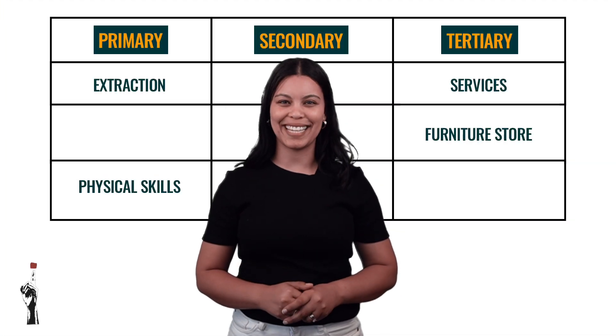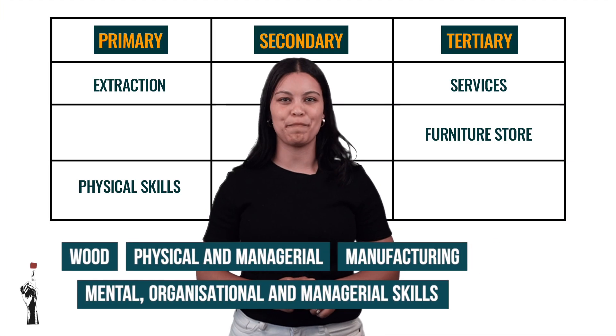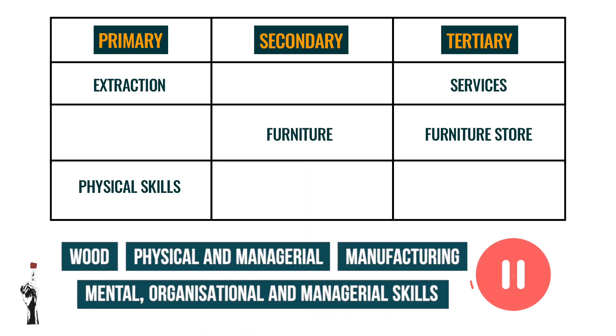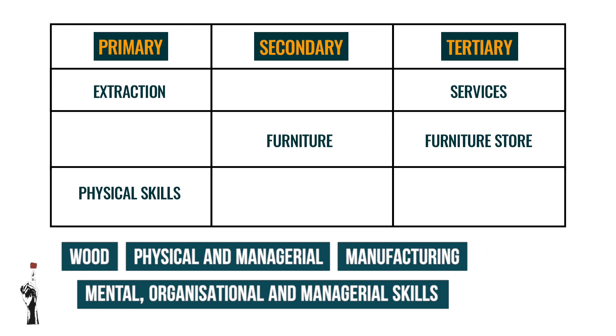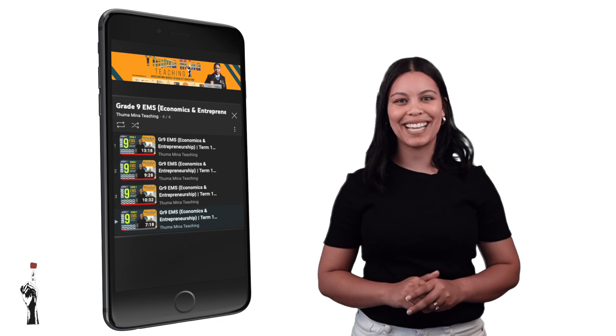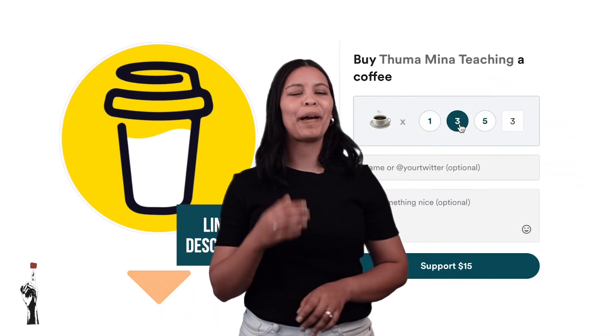Let's put your knowledge to the test. Complete the table by filling in the missing information. We will put up the pause button so that you can complete this activity effectively. Well done, Grade 9s. We have just completed our final lesson for Term 2. I am so proud of you. Please remember to complete the self-marking assessment by scanning the code next to me. Also remember to revise all of our lessons for your June assessment. If you enjoyed this lesson, go and buy me or Kamba a coffee. Until next term. Bye!